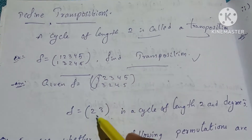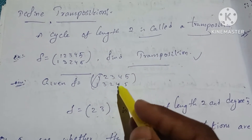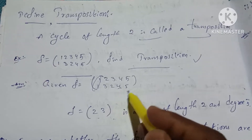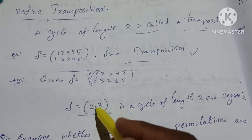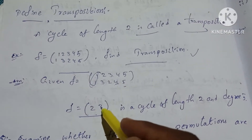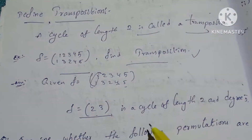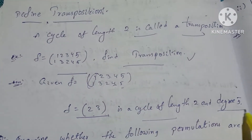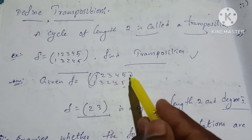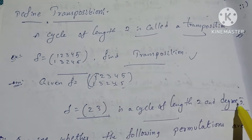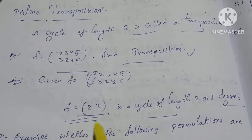So (2, 3) is one cycle. 4 goes to 4, 5 goes to 5 — same. So these are the cycles: (2, 3) is one cycle of length 2. Length is two elements, so length 2 is a transposition. This is a cycle of length 2 and degree 5. Length 2 is transposition.